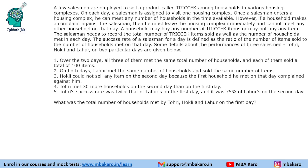A few salesmen are employed to sell a product called pre-kick among households in various housing complexes. On each day, a salesman is assigned to visit one housing complex. Once a salesman enters a housing complex, he can meet any number of households in the time available. However, if a household makes a complaint against the salesman, he must leave the housing complex immediately and cannot meet any other household on that day. A household may buy any number of pre-kick items or may not buy any item. The salesman records the total number of pre-kick items sold as well as the number of households met each day. The success rate is defined as the ratio of the number of items sold to the number of households met on that day.